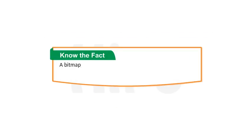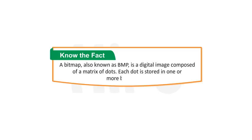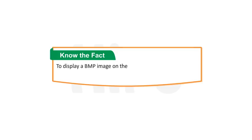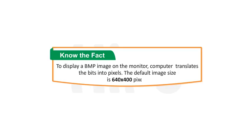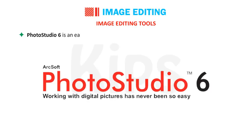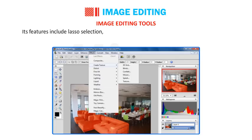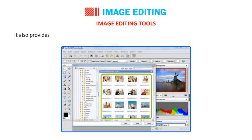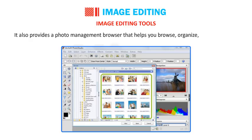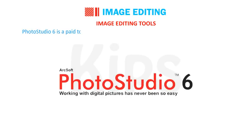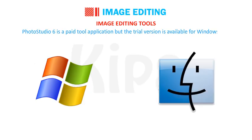A bitmap, also known as BMP, is a digital image composed of a matrix of dots. Each dot is stored in one or more bits of data. To display a BMP image on the monitor, the computer translates the bits into pixels. The default image size is 640 x 400 pixels. Photo Studio 6 is an easy to use tool for enhancing and touching up digital photos. It supports all popular photo formats, and its features include lasso selection, photo cloning, multi-layer support, text layer, printing and more. It also provides a photo management browser that helps you browse, organize and search files. Photo Studio 6 is a paid tool but a trial version is available for Windows and Mac OS.